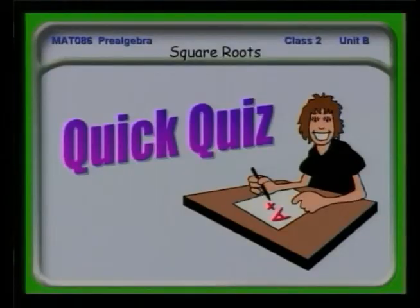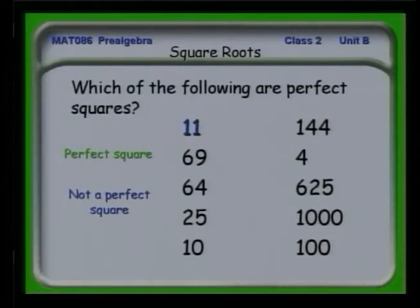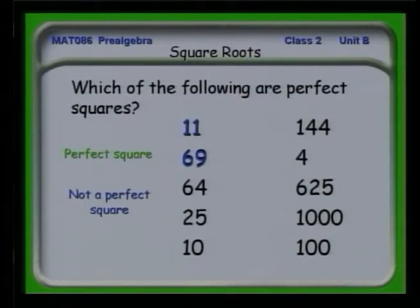Let's take a quiz. You can follow along on whether or not these numbers are perfect squares. If it is a perfect square, the number will turn green after I trigger it. If it's not, it turns blue. Is 11 a perfect square? It turned blue — it's not. What times itself is 11? I can't think of anything. Is 69 a perfect square? There's no whole number that will do it. What about 64? Yes, it is — 8 times 8 is 64.